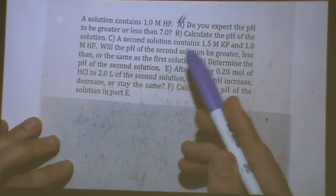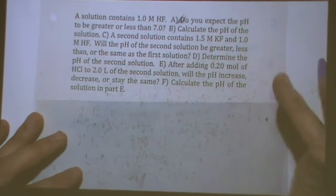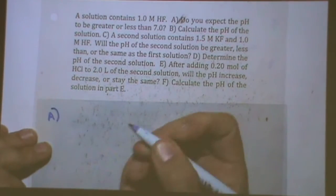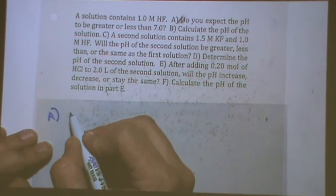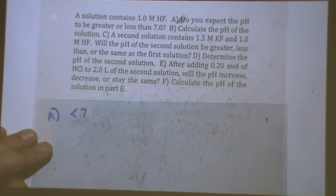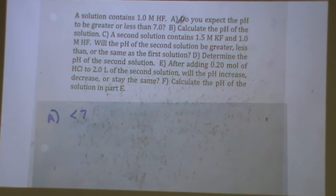Okay, part A. For this one molar HF, do you expect the pH to be greater or less than 7? Okay, less than 7 because it's an acid, HF.